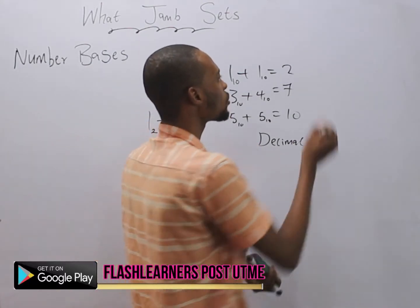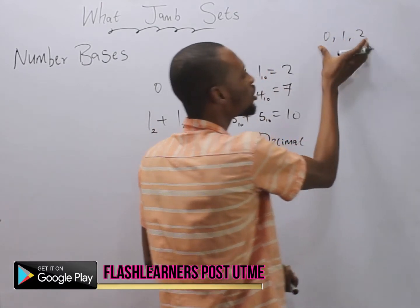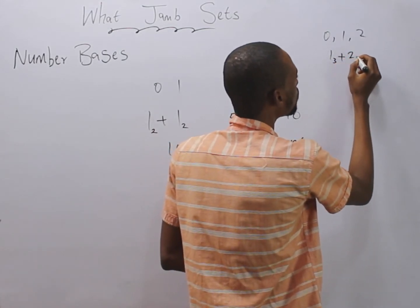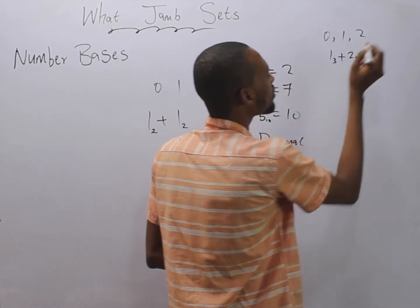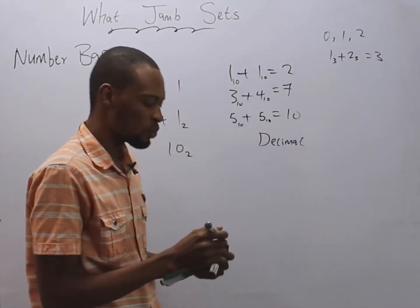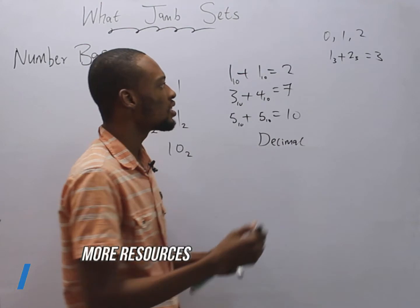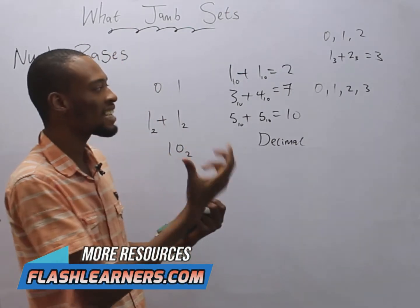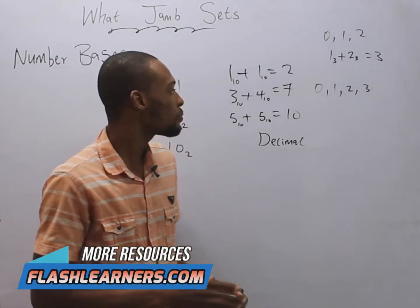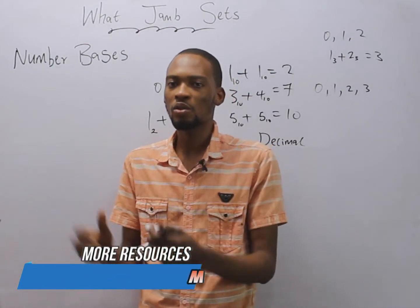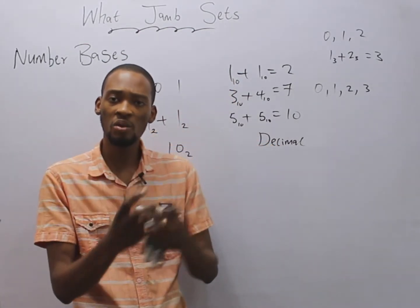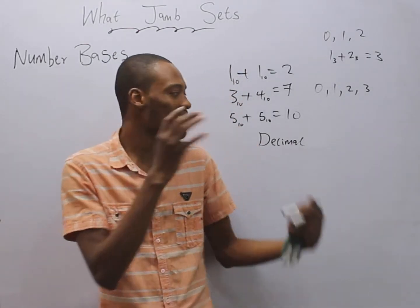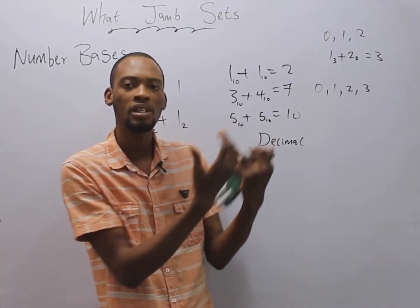Similarly, if we are dealing with base three, the highest number in base three should be two, so we have zero, one, two — these are the numbers that can appear in base three. So one base three plus two base three cannot equal three. In any base you are dealing with, the highest number should be less than the base. In base ten, the highest number is nine: zero, one, two, three, four, five, six, seven, eight, nine.